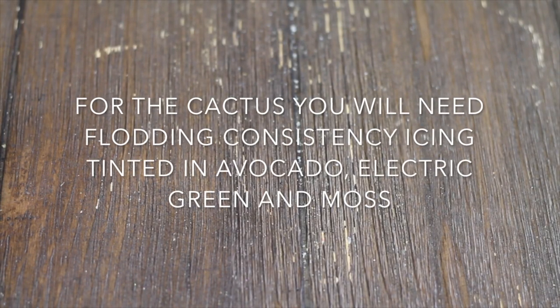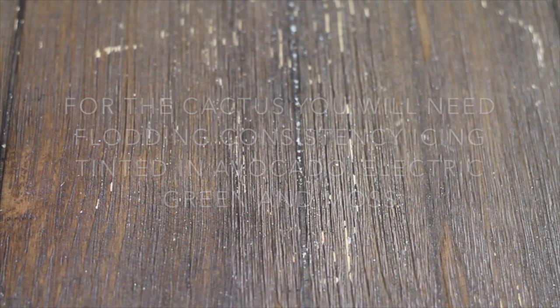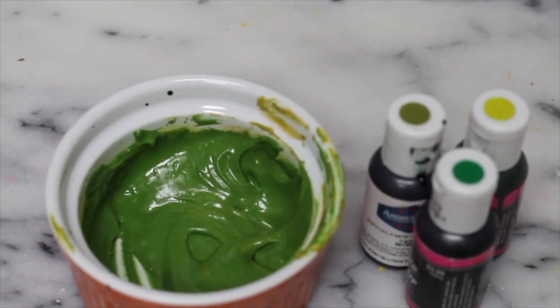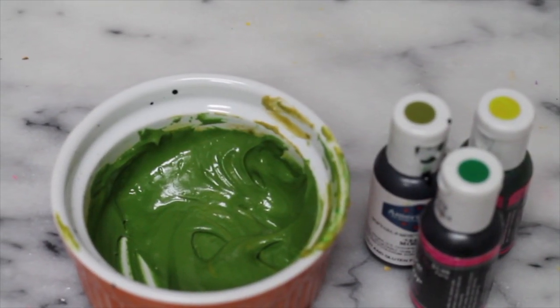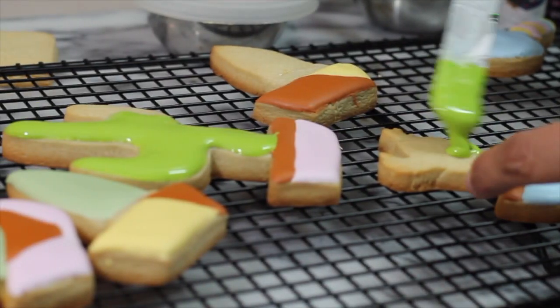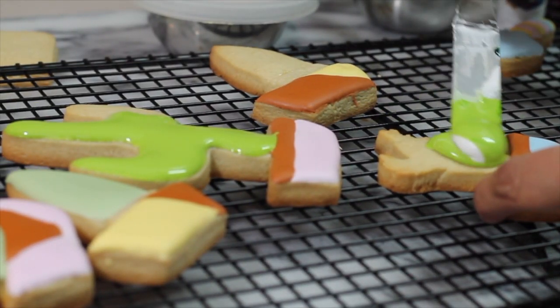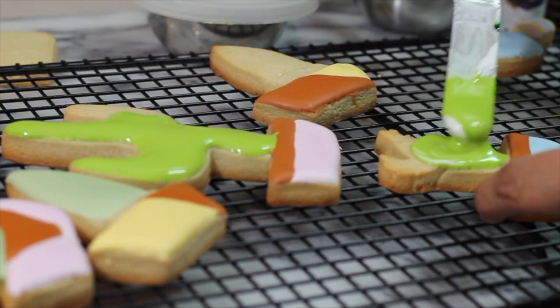Then you are going to prepare green royal icing using avocado, and from that color you are going to start adding the different shades of green to make different colors. Add your green icing to your cactus and let them dry.